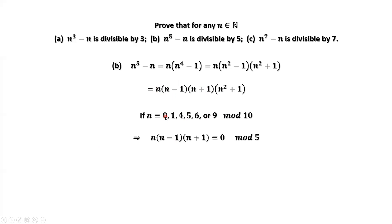If the last digit is 0, we can replace N by 0, so the product is 0, which is divisible by 5. If the last digit is 1, then N minus 1 has last digit 0, so the whole product is divisible by 5. If the last digit is 4, then N plus 1 ends in 5, which is divisible by 5. If it is 6, then N minus 1 ends in 5, which is divisible by 5. If it is 9, then N plus 1 ends in 10, so the last digit is 0 and the whole product is divisible by 5.